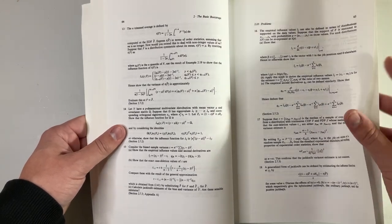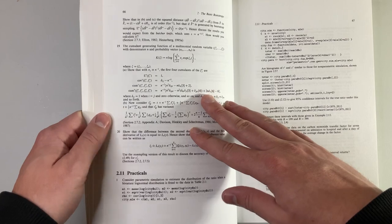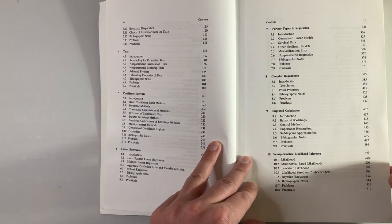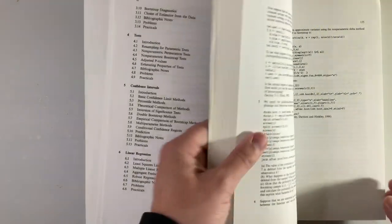Chapters following chapter two cover graduate level statistical material. Topics include censoring and semi-parametric likelihood.